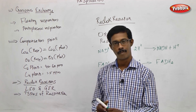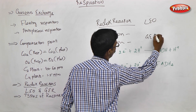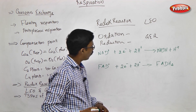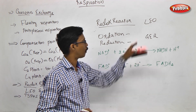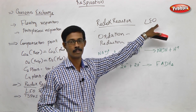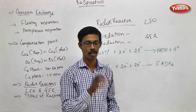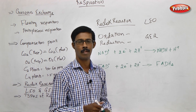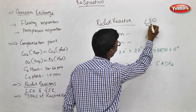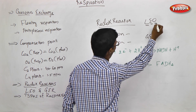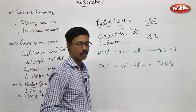LEO, GER — that is the mnemonic for oxidation and reduction. LEO: Loss of Electrons is Oxidation. GER: Gain of Electrons is Reduction. So loss of electrons is called oxidation — electrons loss is called oxidation.